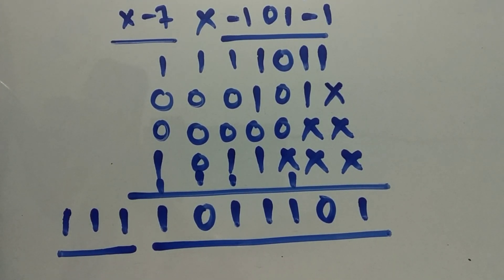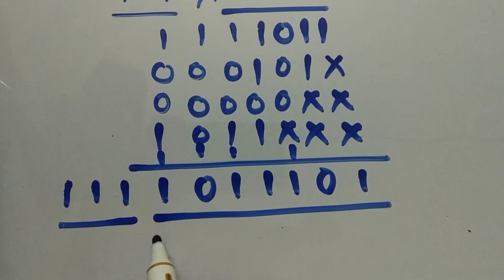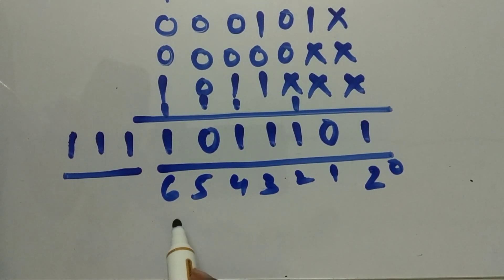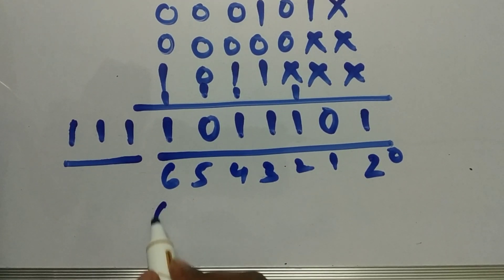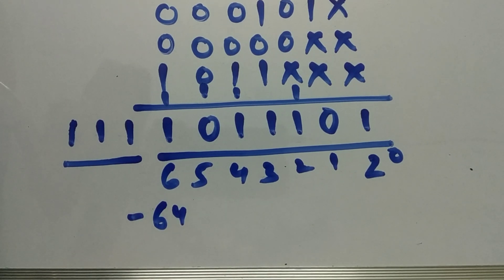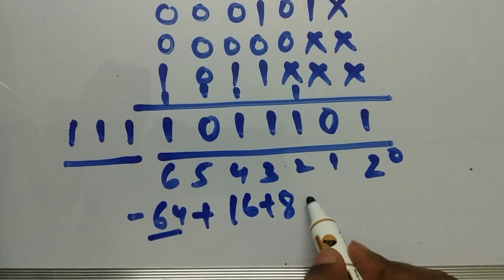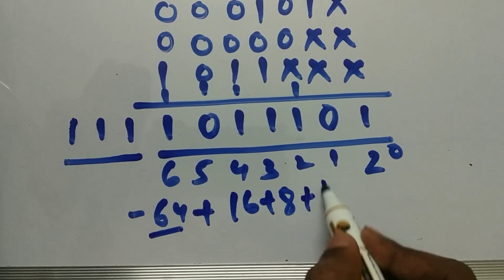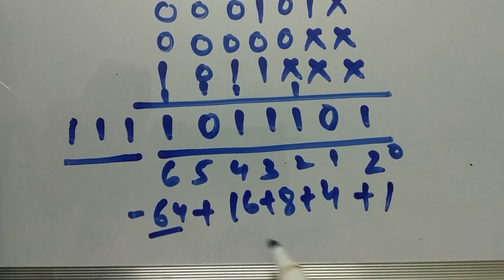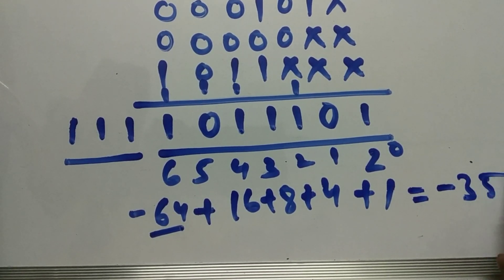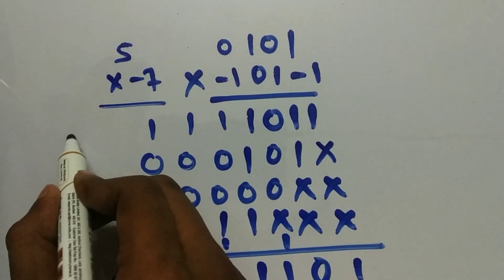So the final value we got is: calculating with positions 2⁶ (minus, since in 2's complement) equals -64, plus 2⁴ = 16, plus 2³ = 8, plus 2¹ = 2, plus 2² = 4, plus 1 = -35. So 5 × -7 = -35.